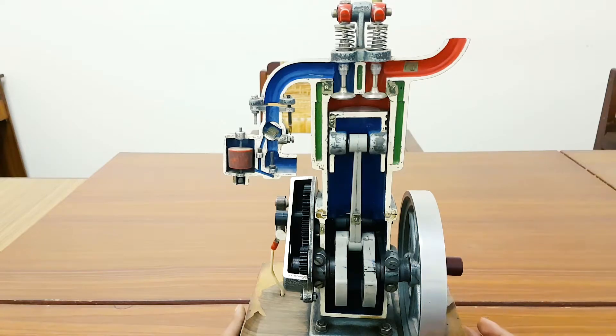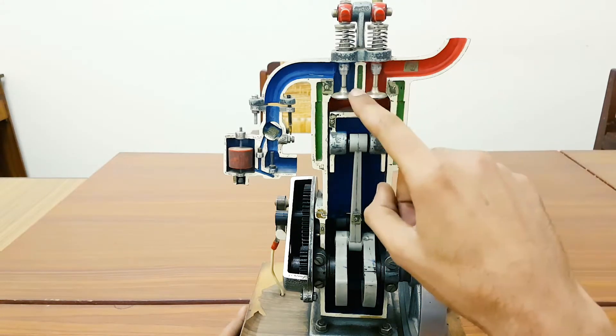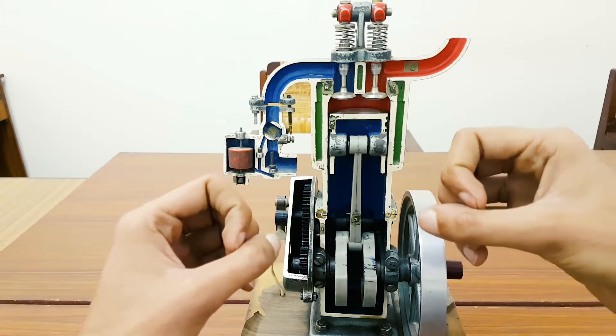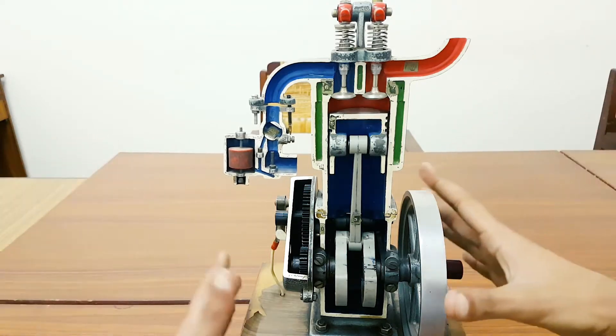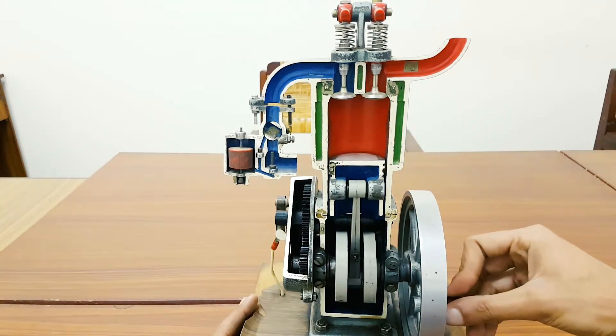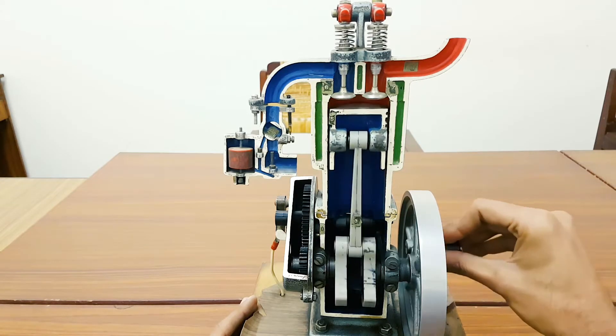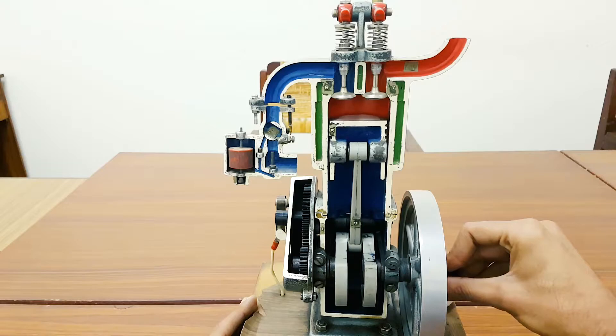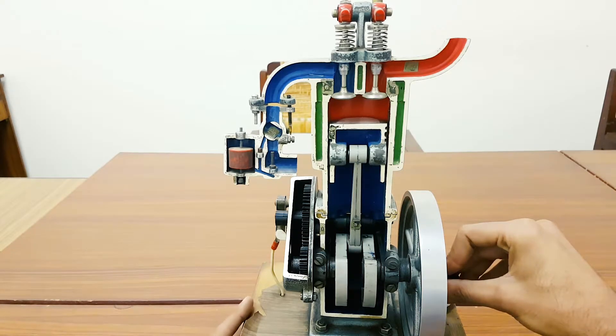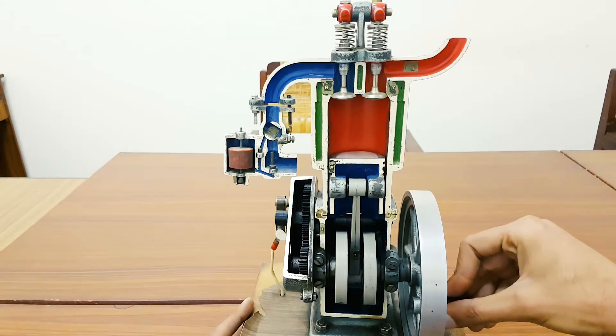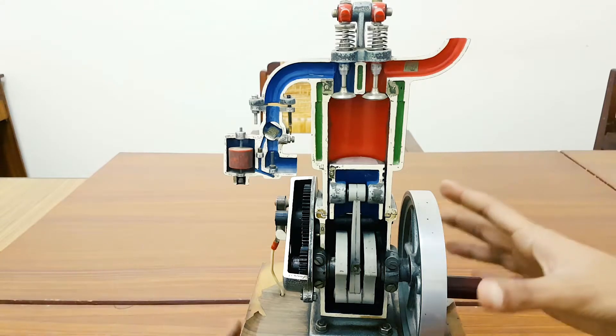Now at this stage, the spark plug fires, gives a spark over here. Due to that spark, the air-fuel mixture explodes. By explosion, it expands and pushes the piston down again. This stroke is called the power stroke. You can see both valves are closed, spark plug delivers a spark, and your air-fuel mixture explodes and the piston moves down.